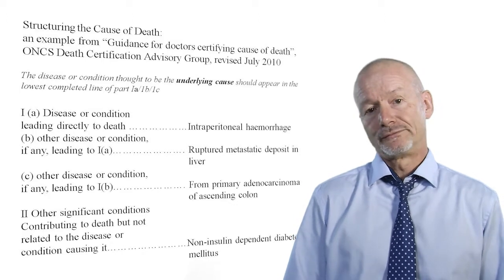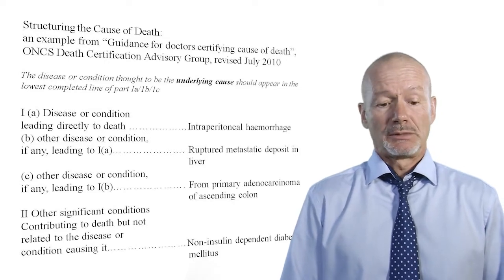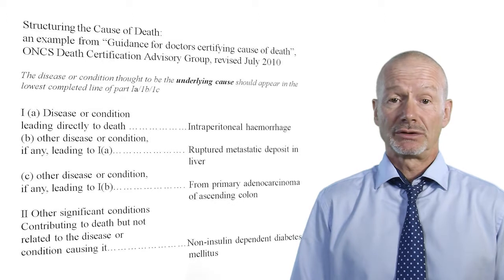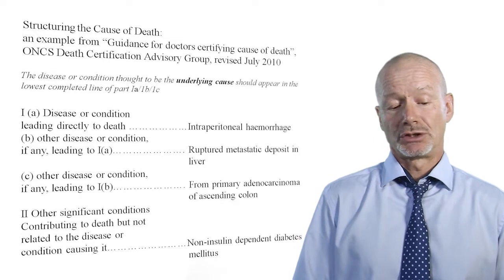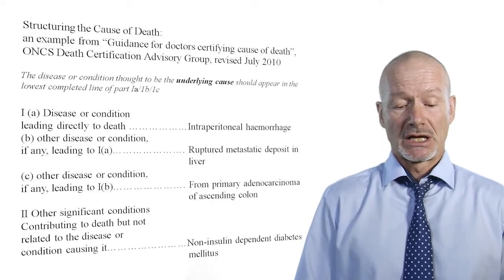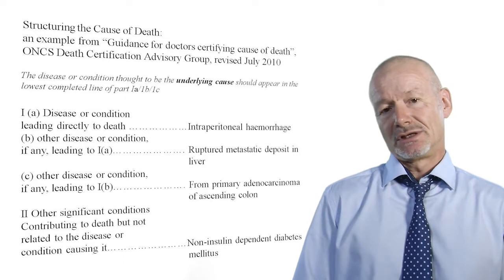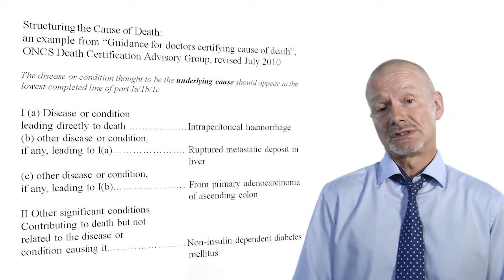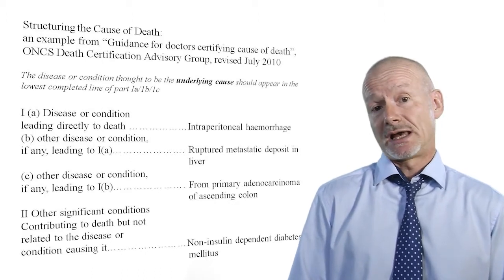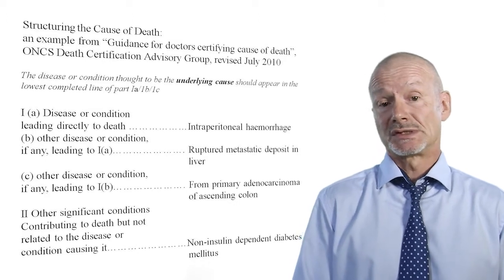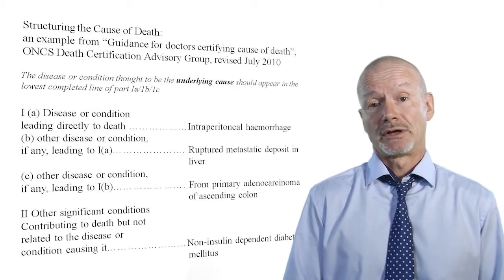Here's an example from the government booklet advice to doctors filling in medical certificates. In this case, 1A is intraperitoneal haemorrhage, due to 1B ruptured liver deposit, from 1C cancer of the colon, and in Part two, diabetes mellitus. What this certificate is saying is that the bottom of the 1 series, this person died from cancer of the colon, and that diabetes contributed to death — perhaps because management of the peritoneal haemorrhage was complicated by their diabetes.